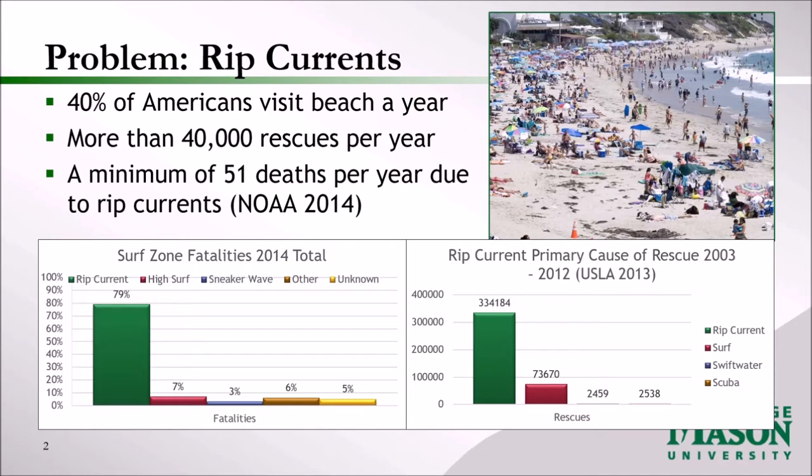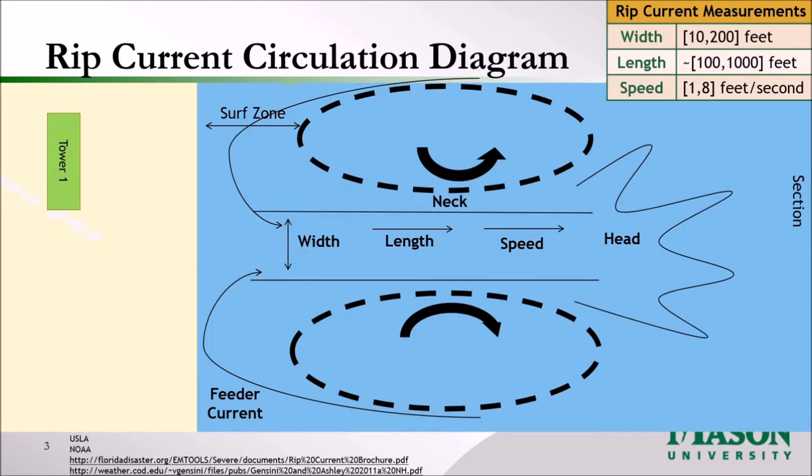40% of the U.S. population went to the beach in 2007. From 2003 to 2012, rip currents are the primary cause of rescue — they accounted for 81% of the rescues. In 2014, the rip current fatalities accounted for 79%.